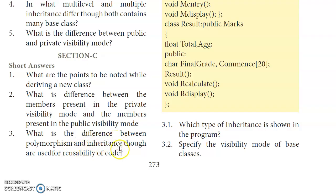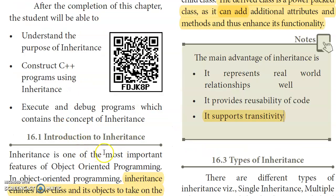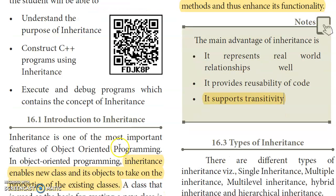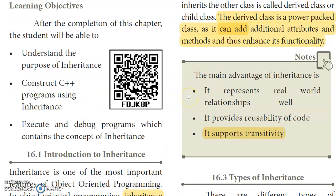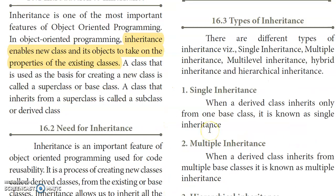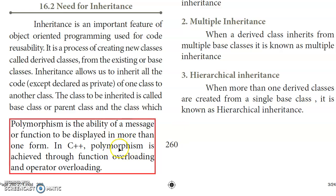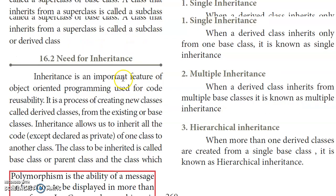Seventh question: What is the difference between polymorphism and inheritance, though both are used for reusability of code? Inheritance enables a new class to use the properties and objects of an existing class. Inheritance also supports transitivity. Polymorphism, on the other hand, allows functions or methods to behave differently based on context. These are the key differences between inheritance and polymorphism.